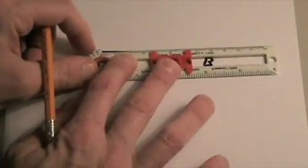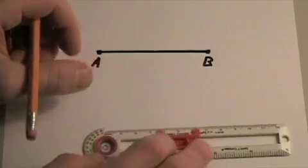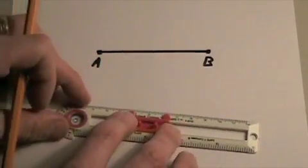Now we're not going to use the ruler and just measure it and redraw the line the same length. We're going to use the compass to make a copy of it.